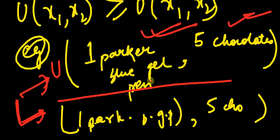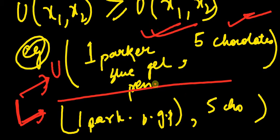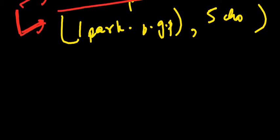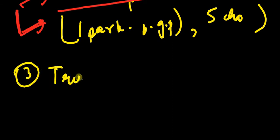One Parker blue gel pen and five chocolates give you the same utility at one time as at another time. So the same bundle should fetch you the same utility. The third thing I want to talk about is transitivity.